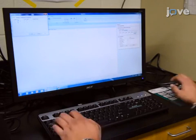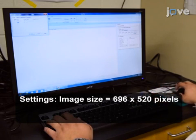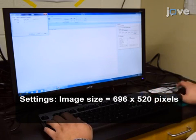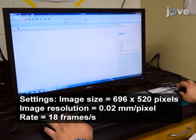Within the digital video recording software, set up the following settings: image size of 696 x 520 pixels, image resolution of 0.02 mm per pixel, and a rate of 18 frames per second.